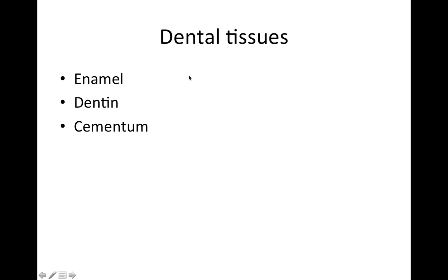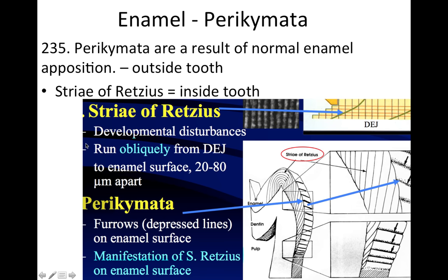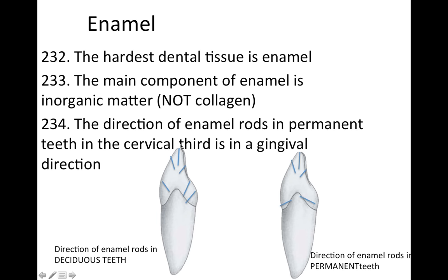Now we're going to go through some dental tissues: enamel, dentin, and cementum. Enamel is the hardest dental tissue. The main component of enamel is inorganic matter, not collagen. The direction of the enamel rods in the permanent teeth in the cervical third is in the gingival direction.